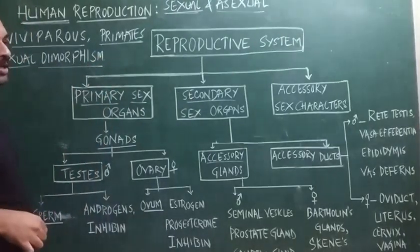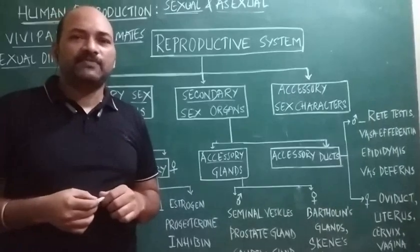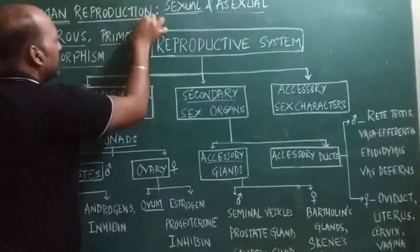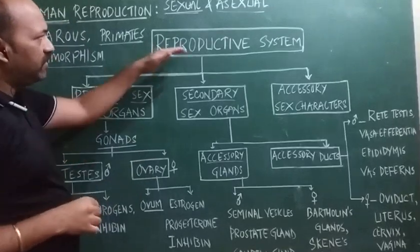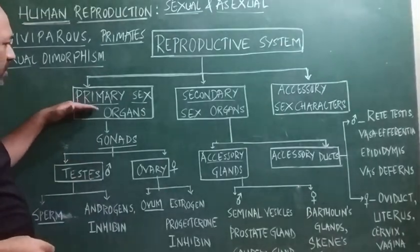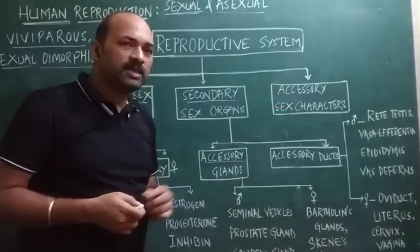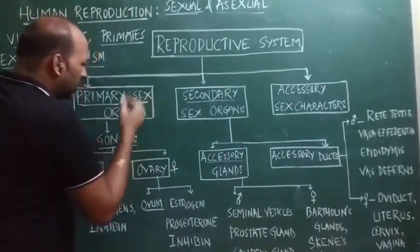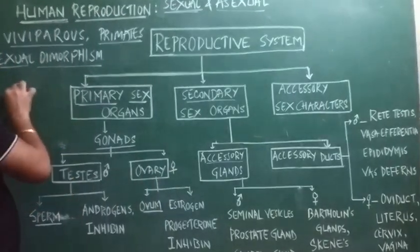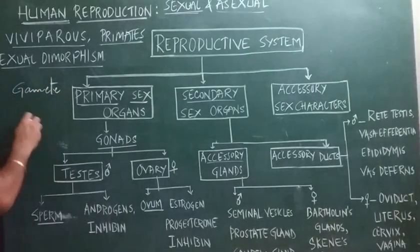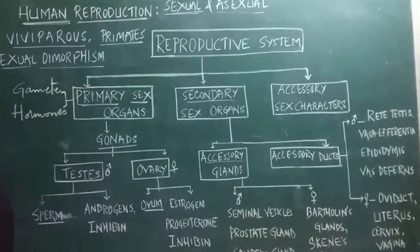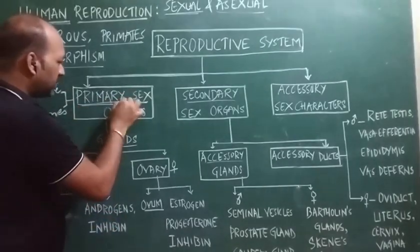Sexual dimorphism refers to the identification of both males and females based on external characters. Human reproduction occurs in a well-developed reproductive system. The reproductive system in humans consists of primary sex organs, secondary sex organs, and accessory sex characters. Primary sex organs have two main functions: the primary function is production of gametes, and the secondary function is secretion of hormones. These primary sex organs are the gonads.